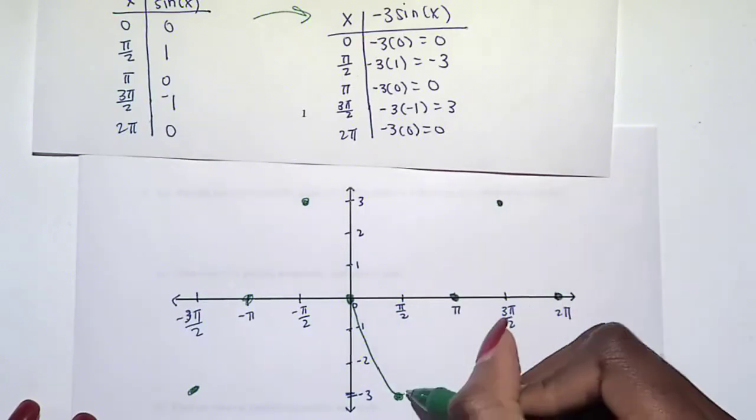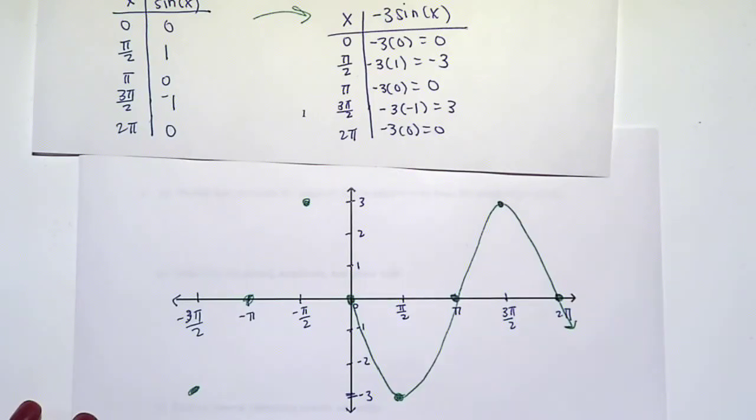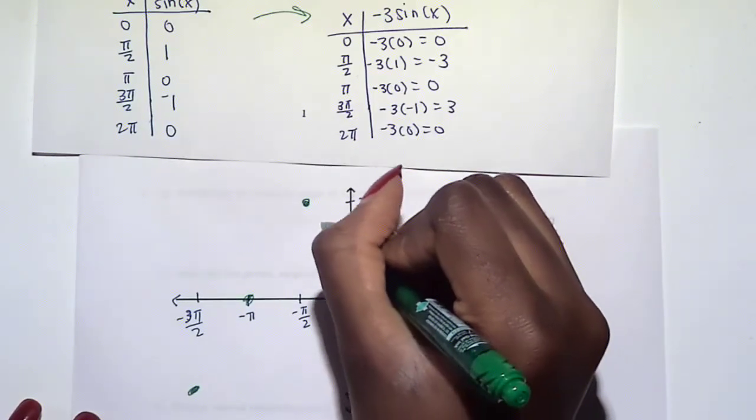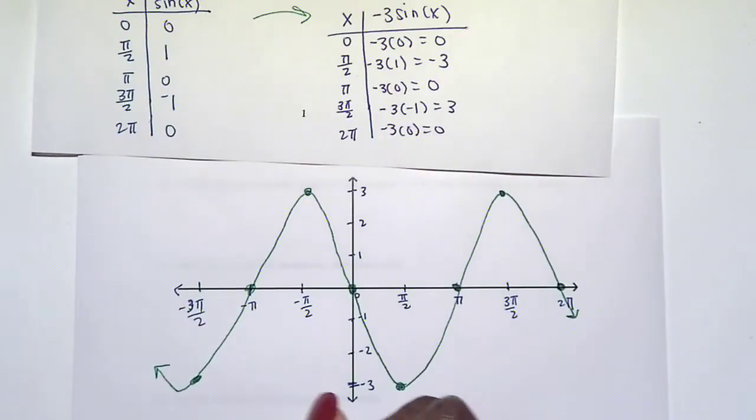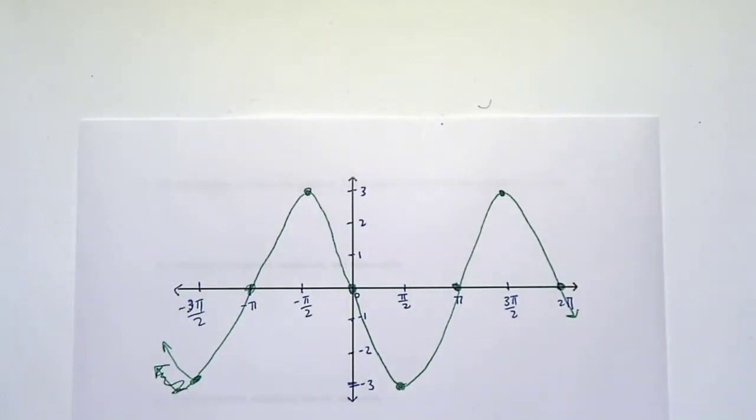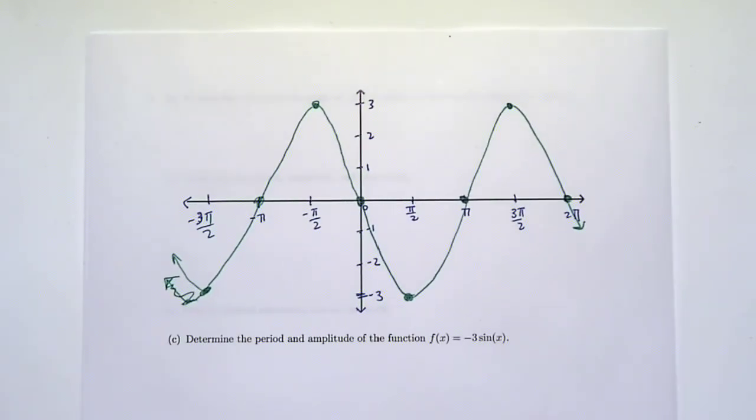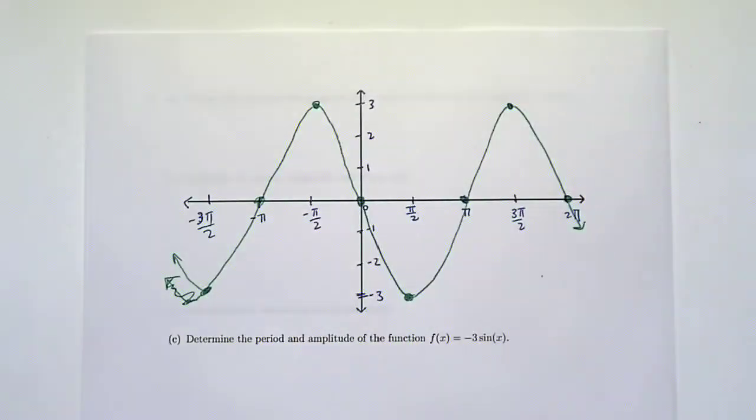Then we're just going to connect our dots and create our little sine wave. Of course this goes on. Here's the graph of our sine function that has been reflected and also been stretched 3 units. So it should look like this, but reflected and stretched.